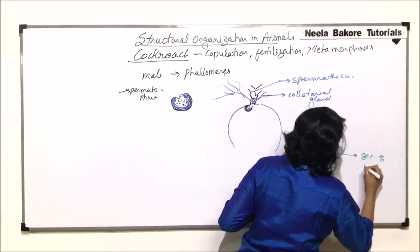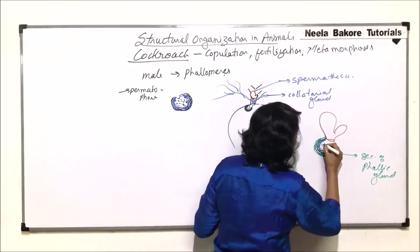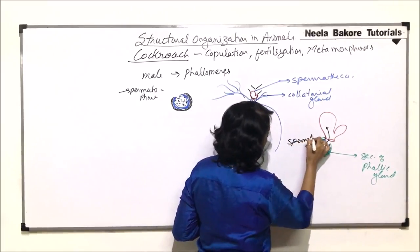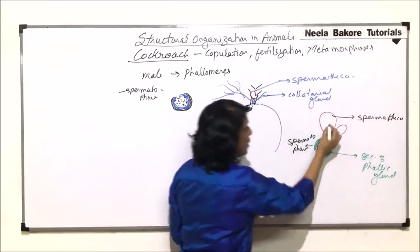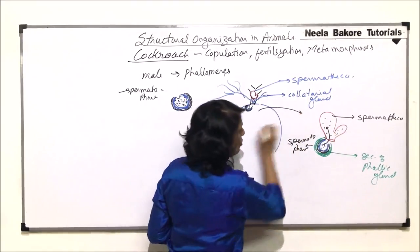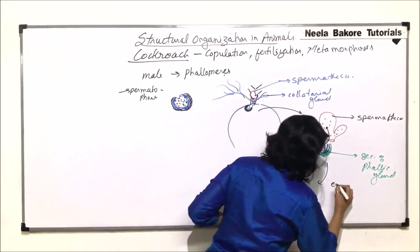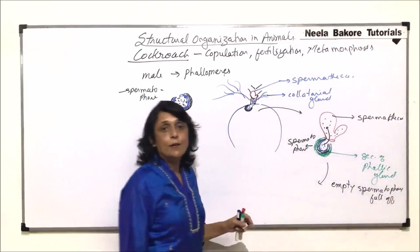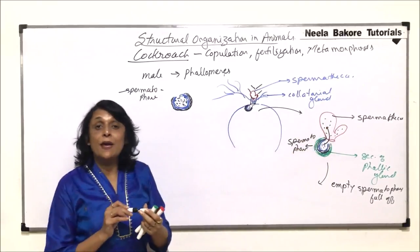The outermost layer is the secretion of the phallic gland and it becomes very hard. Slowly, the sperms are transferred from the spermatophore into the spermatheca, where they are stored. Once the sperms are transferred, the empty spermatophores fall off and are lost from the female's body, but the sperms remain stored in the spermathecal sacs.